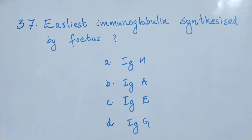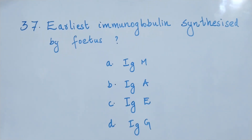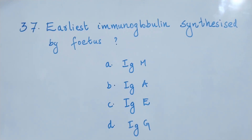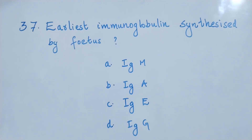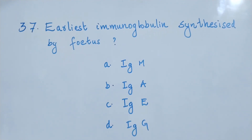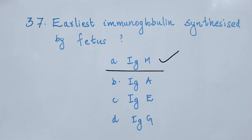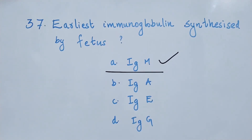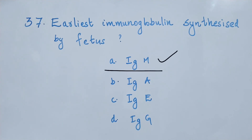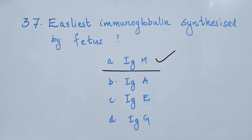Question number 37. Earliest immunoglobulin synthesized by fetus. Option A: IgM. Option B: IgA. Option C: IgE. Option D: IgG. Which of the following immunoglobulins is synthesized earliest by the fetus? The right answer is option A, IgM. IgM is the earliest immunoglobulin synthesized by the fetus.